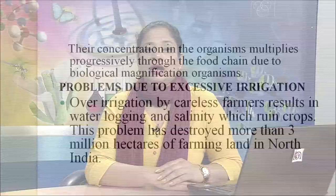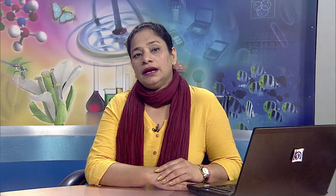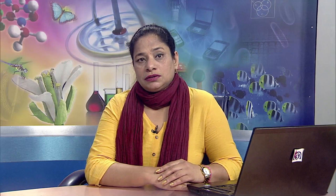Problems due to excessive irrigation: over-irrigation by careless farmers results in waterlogging and salinity, which ruins crops. This problem has destroyed more than 3 million hectares of farming land in North India. Waterlogging: excessive irrigation of land without proper drainage raises the water table, causing the soil to become saturated with water. Waterlogged soil cannot support good plant growth due to lack of air, particularly oxygen, which is essential for respiration of plant roots. Waterlogged soil also lacks mechanical strength and cannot support the weight of plants, resulting in loss of soil productivity.